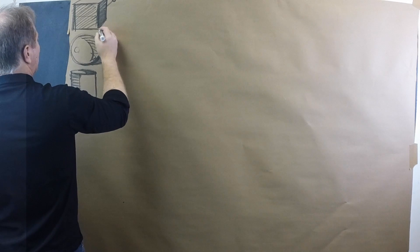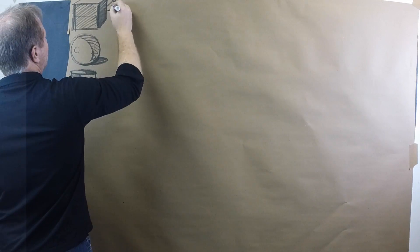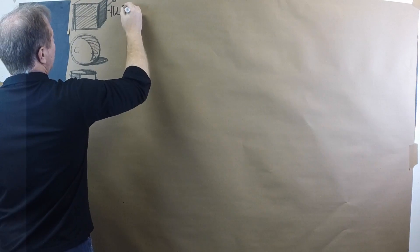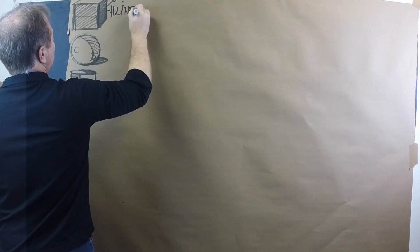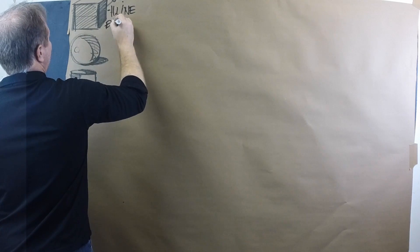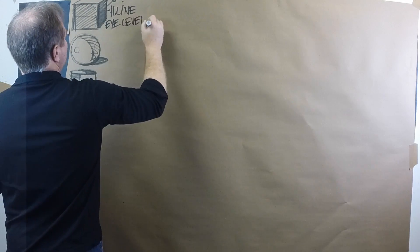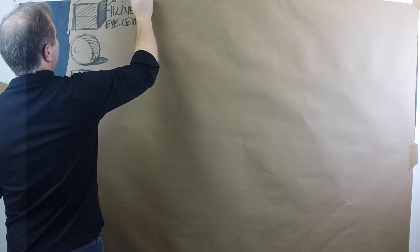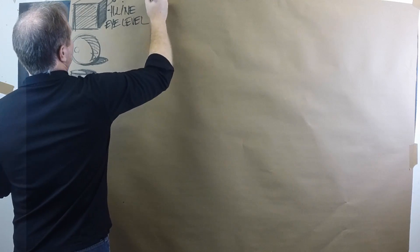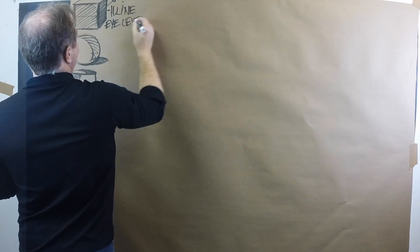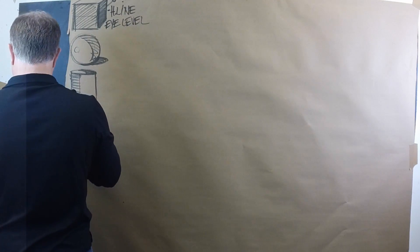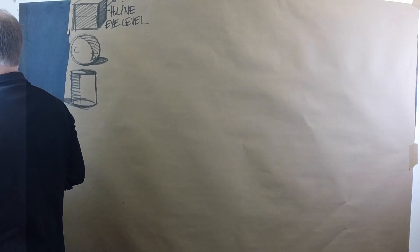So I'll write some vocabulary terms. A horizon line, which is the same thing as eye level, very important to know in one-point perspective. So we've got that. We're going to establish eye line and eye level. So let's do that first.